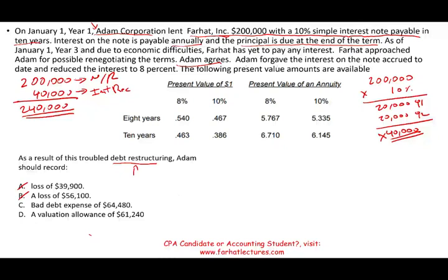Now I'm going to renegotiate everything, and as a result I'm going to lose — I'm losing the $40,000 and I'm reducing my interest rate. But what exactly is the loss? The loss is the difference between the present value of my new note and the $240,000 I currently have on my books. I need to find the present value of the new note and compare it to $240,000.